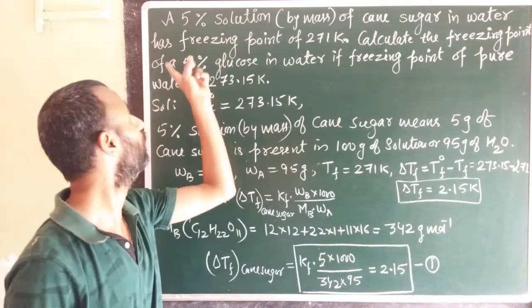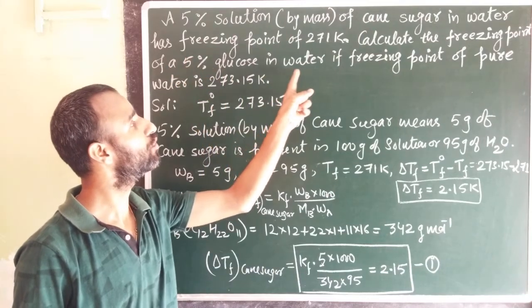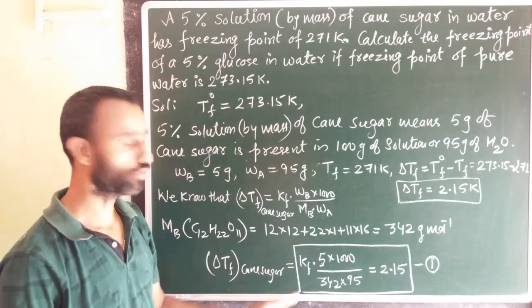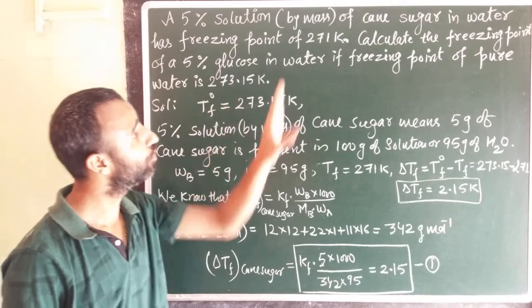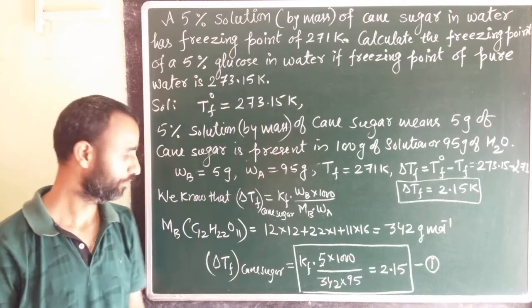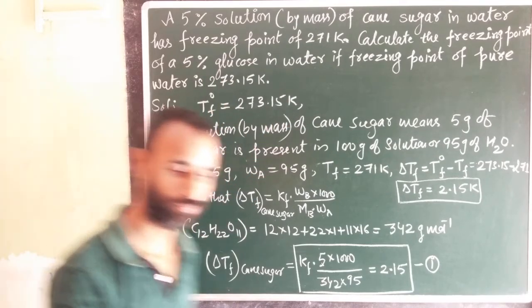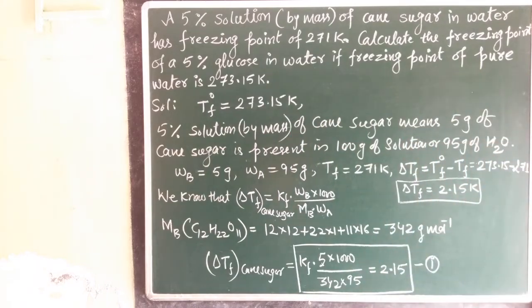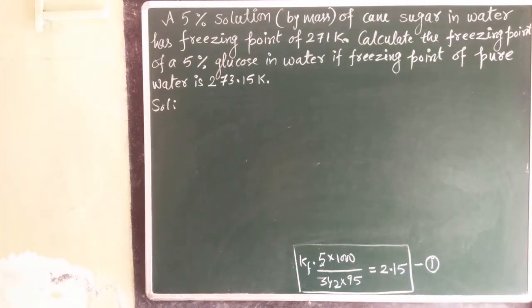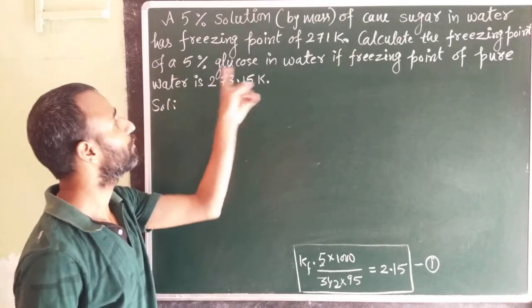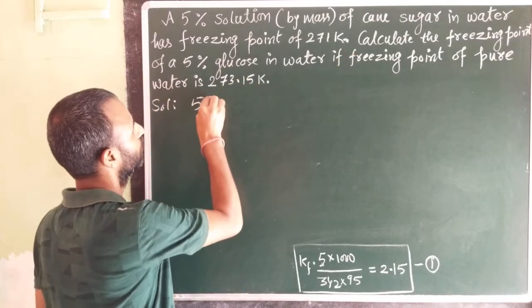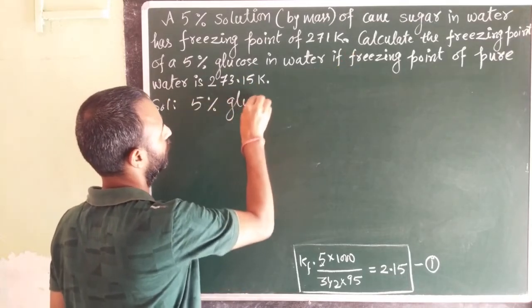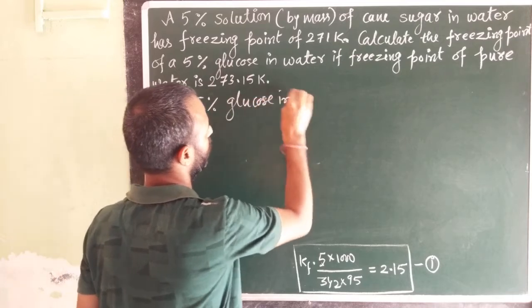Now, calculate the freezing point of 5% glucose in water. Just note down, then we will go further. Next is 5% glucose in water, means again...